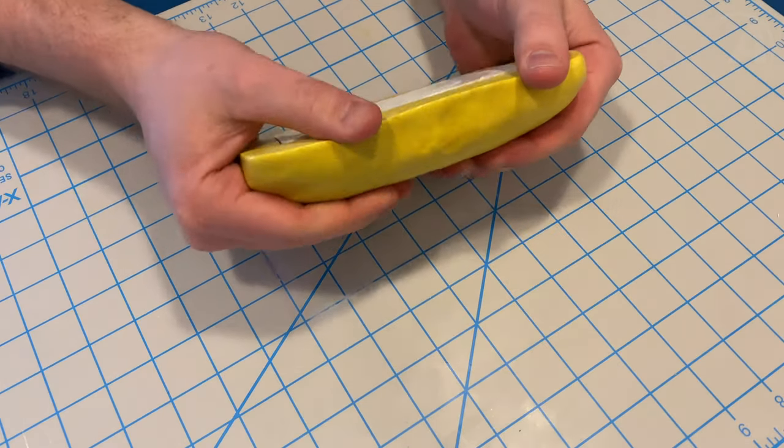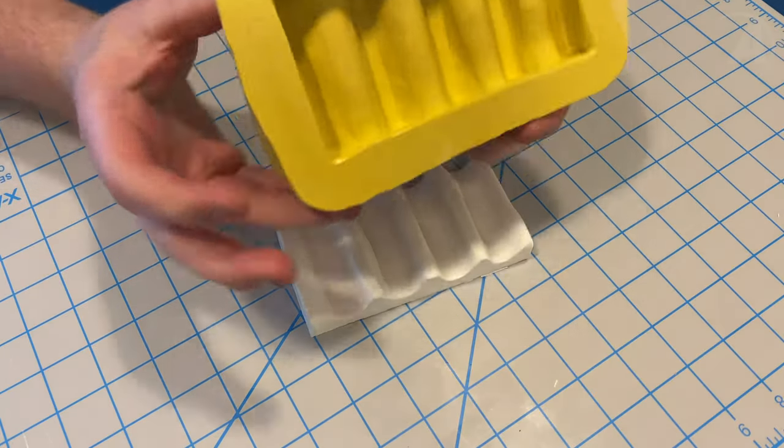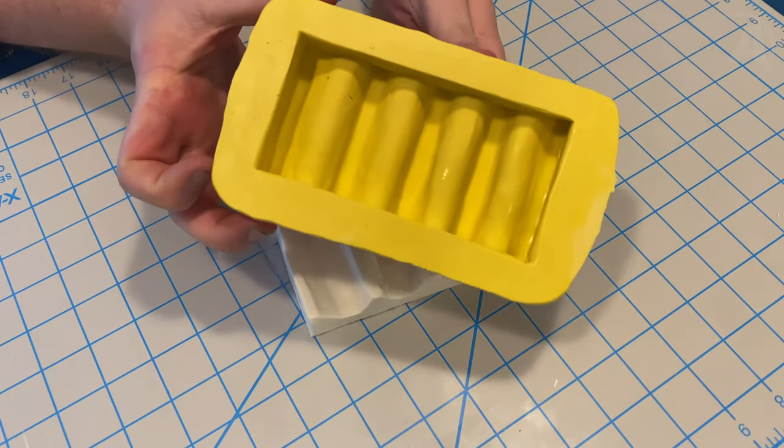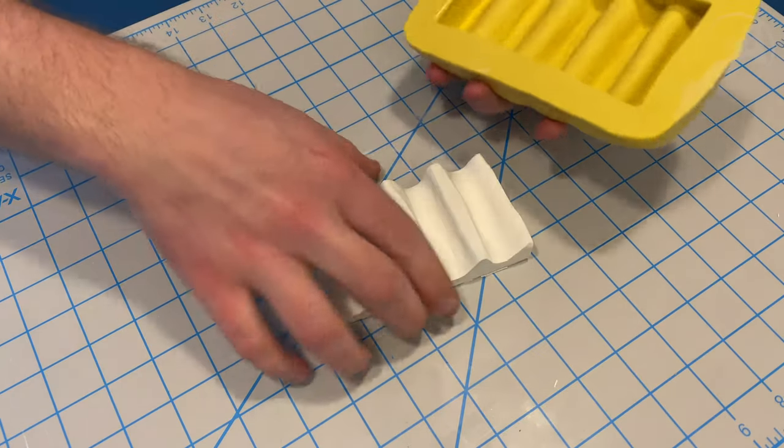Just gently pull the sides away from the clay, and it should come right out. Now you've got a perfect mold to cast whatever colors and patterns you want.